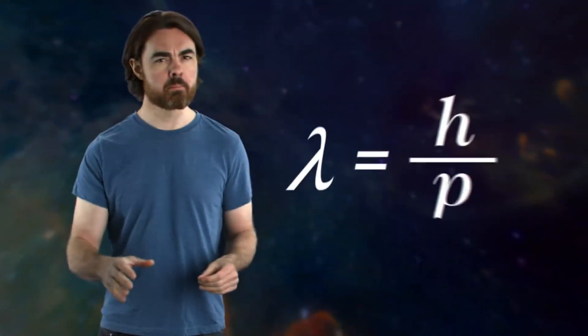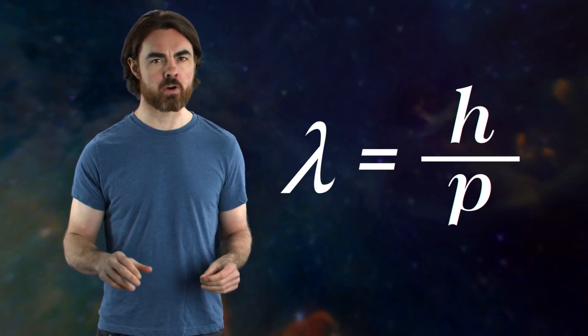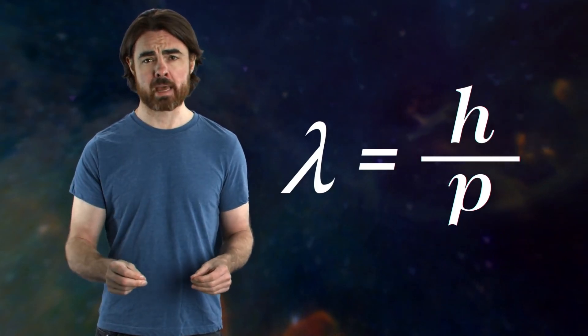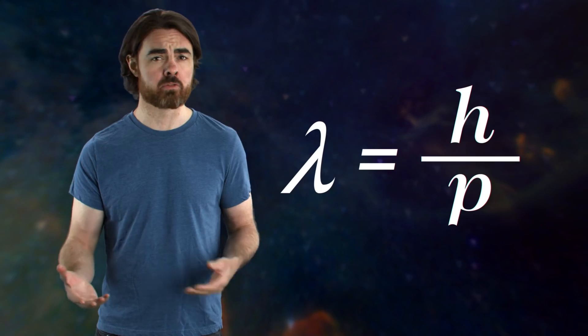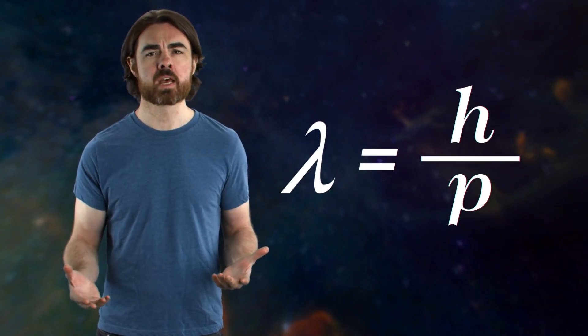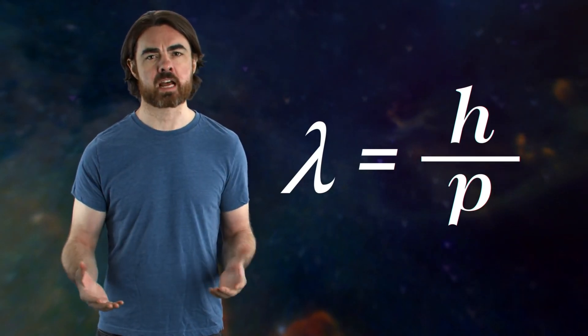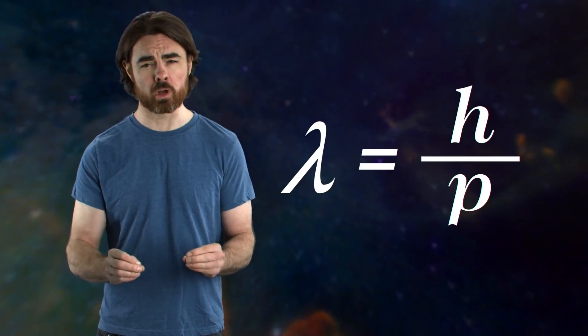See, an object's de Broglie wavelength depends on its momentum, so mass times velocity. Higher momentum means a smaller wavelength. In fact, it's the minuscule Planck constant divided by momentum. Humans are made up of several tens of kilograms of thermally moving particles, and have de Broglie wavelengths a couple of orders of magnitude smaller than the Planck length. You're everywhere in the universe, but not very much. You're as right there as it's possible to be.